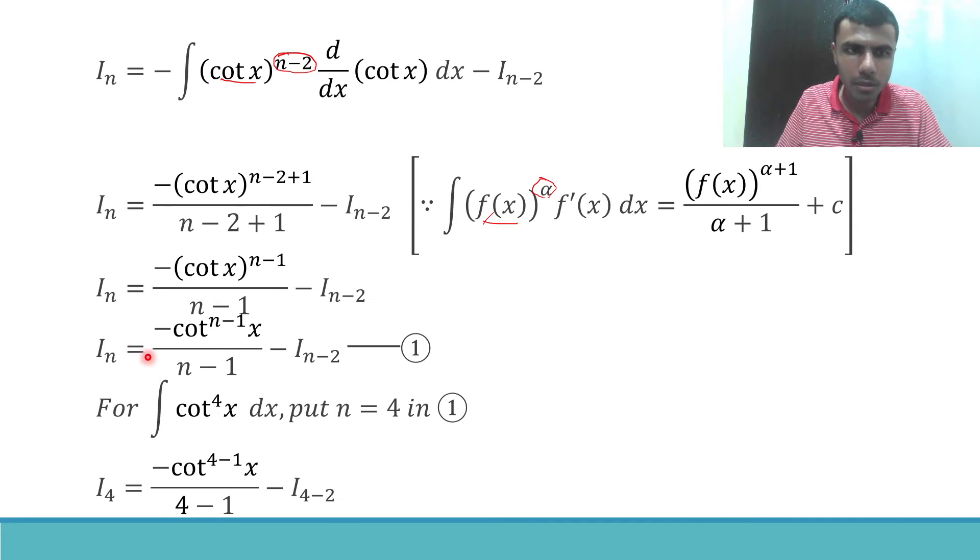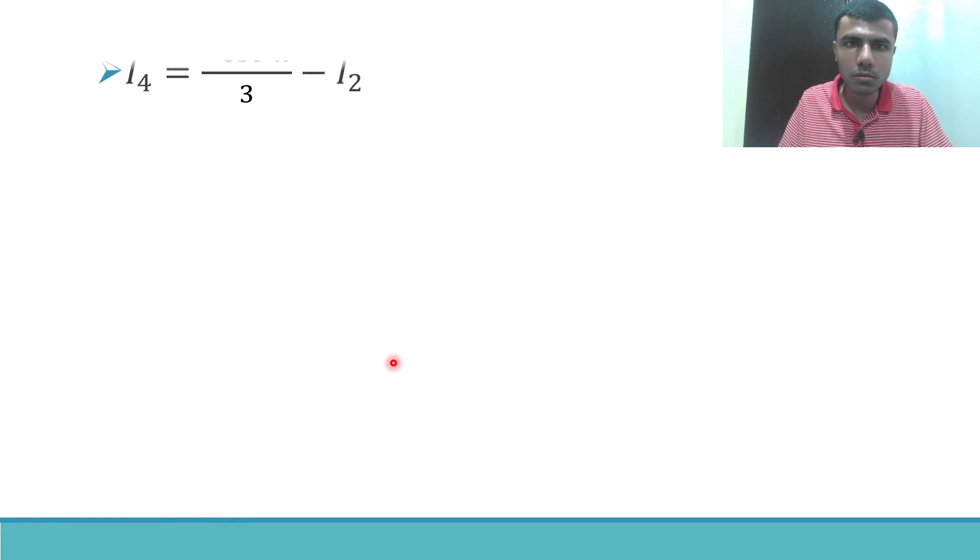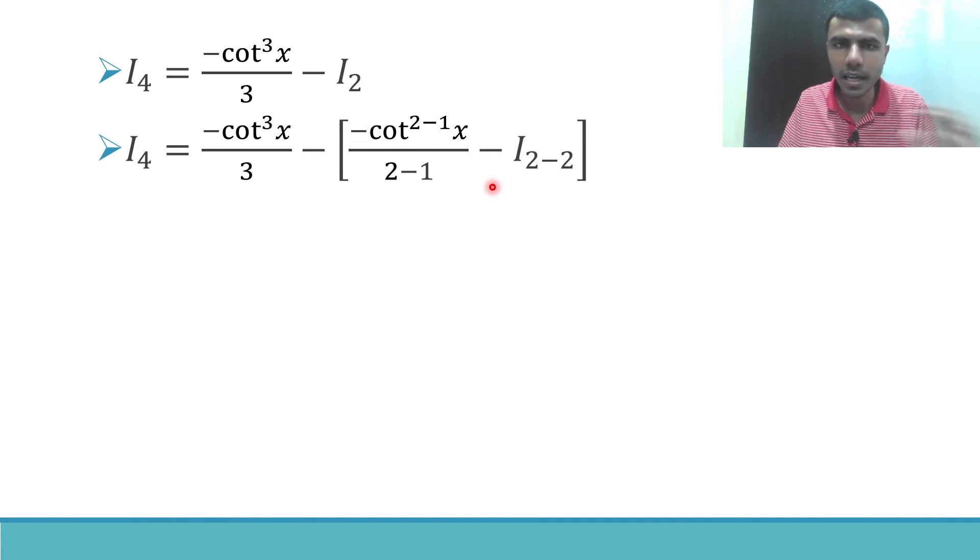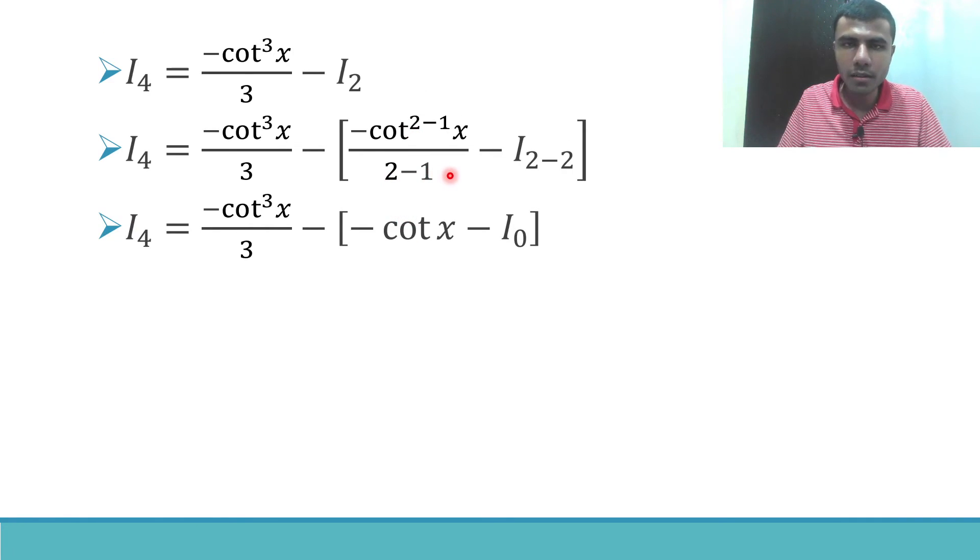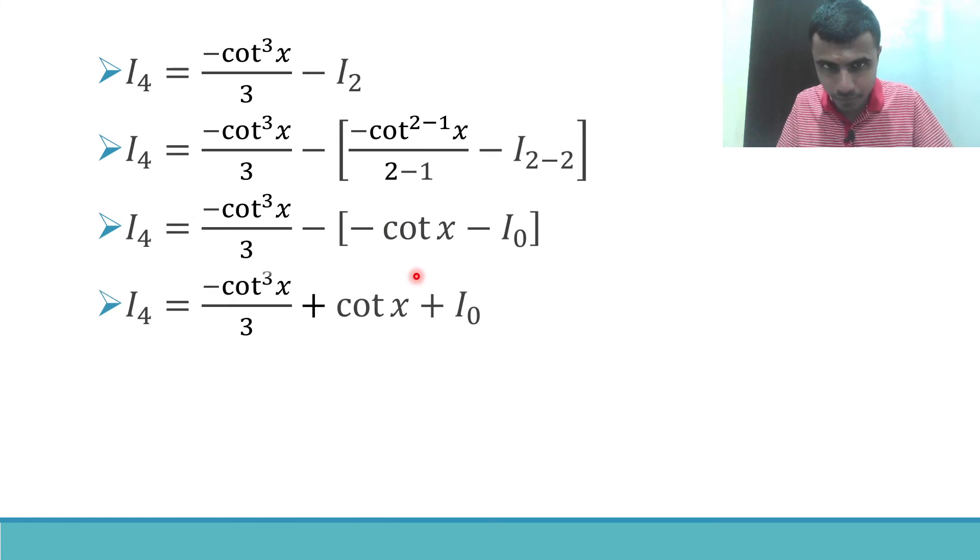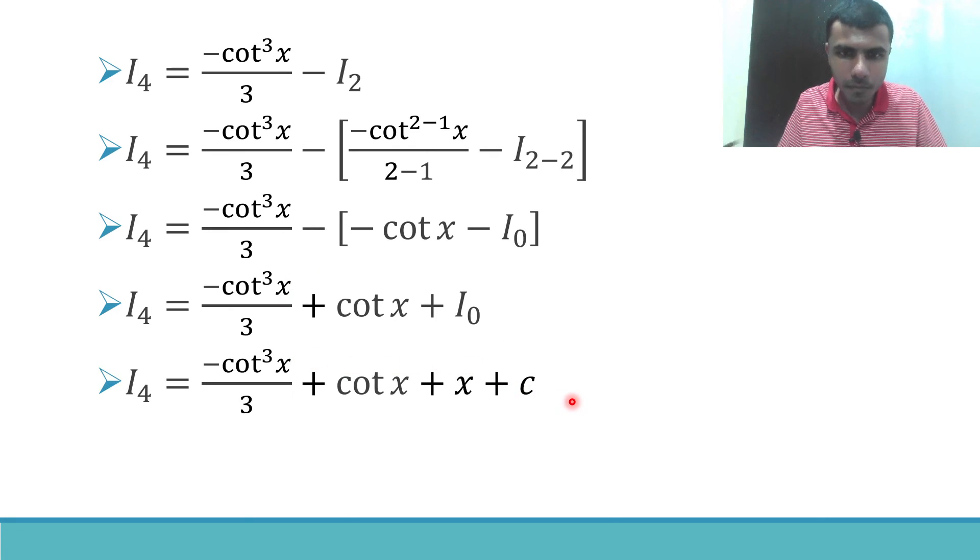Now, how to find out I_2? For I_2 same thing. In this formula put n as 2. So this is what we have. Just simplify cot power 2 minus 1 x. 2 minus 1 is 1, cot power 1 x. So minus cot x by 1. 1 in the denominator may not be written. Now just multiply this minus, like minus into minus is plus. Plus cot x plus I_0. I_0 is x. So here I have x plus c.